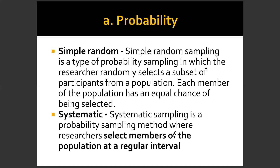On the other hand, systematic random sampling is a probability sampling method where researchers select members of the population at a regular interval. For example, you pick the number five — so the first person selected will be number five, and then every fifth interval will be selected. That means multiples of five: the 5th, 10th, 15th, 20th, 25th, and so on. The regular interval in this case is five. That is systematic random sampling.